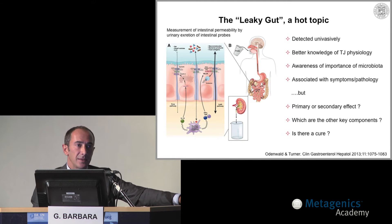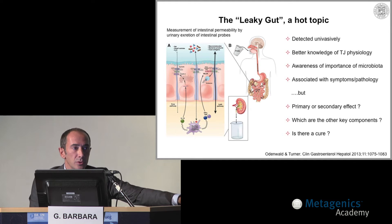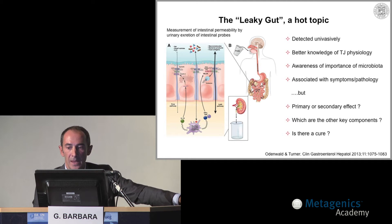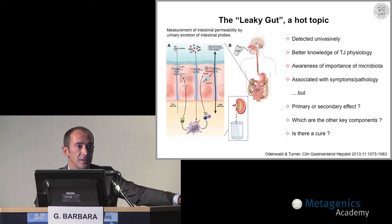The leaky gut is also becoming a more scientific topic because we now know much better the physiology of the tight junctions that regulate permeability through the epithelium in the intestine. It is also becoming important because we know much better the microbiota today, and we understand the microbiota is very important for a number of different disorders, both gastrointestinal and systemic. Furthermore, a leaky gut is often associated with symptoms and pathology, not only in the gastrointestinal tract but also systemic pathology.